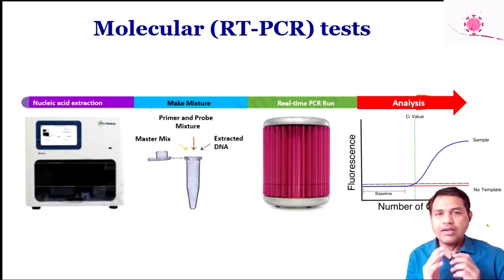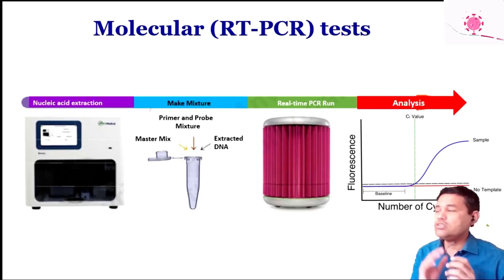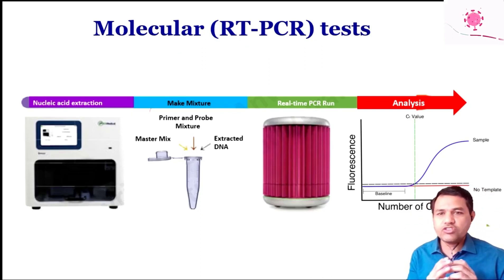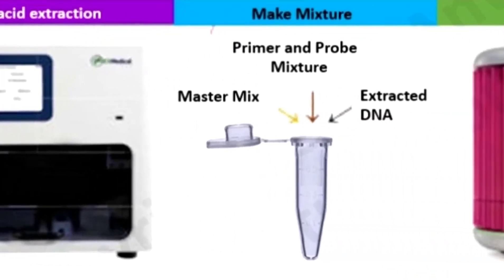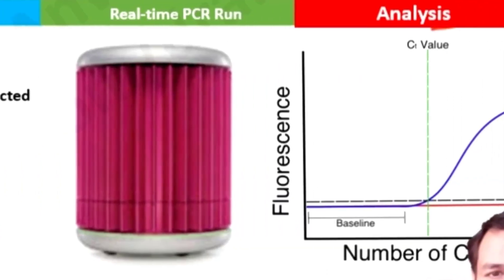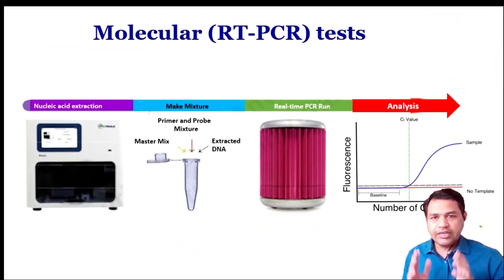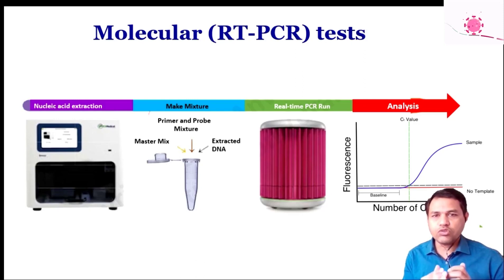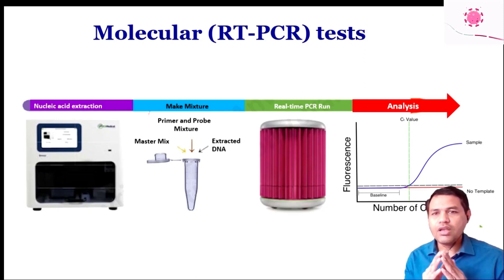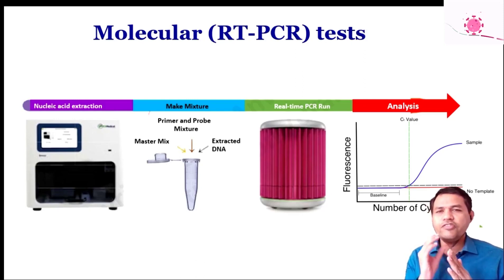Now we will discuss the mechanism of the molecular RT-PCR test. RT-PCR stands for real-time polymerase chain reaction. The steps involved are: first, nucleic acid extraction; then adding various chemicals including primers, probes, and extracted DNA buffer; then the sample goes into the real-time PCR instrument for DNA amplification; and finally, analysis of the result to determine whether it is positive or negative.